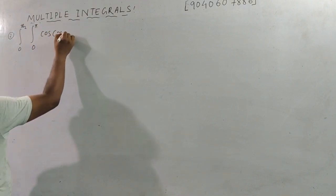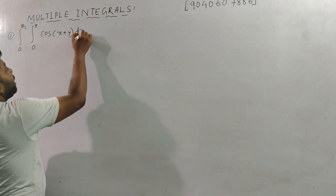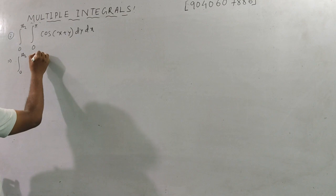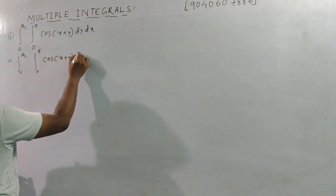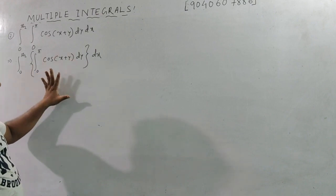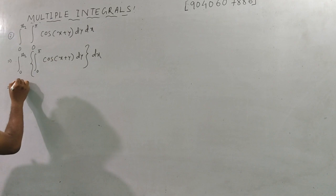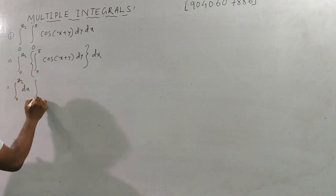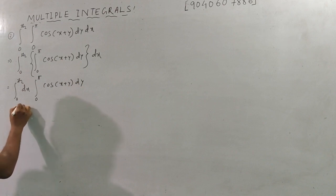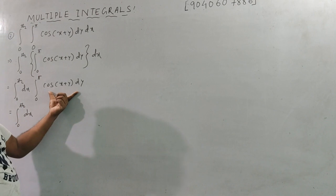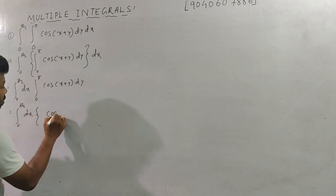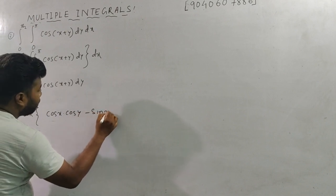Next question: evaluate the double integral from 0 to π/2, 0 to π, of cos(x + y) dy dx. Same process — let's go. First integrate with respect to y, then with respect to x.